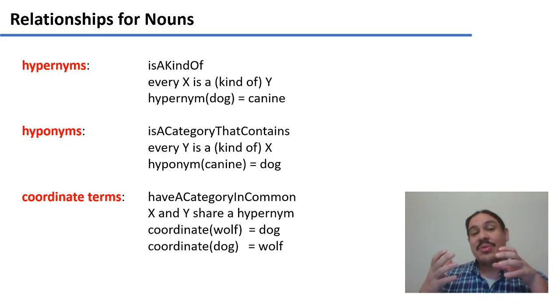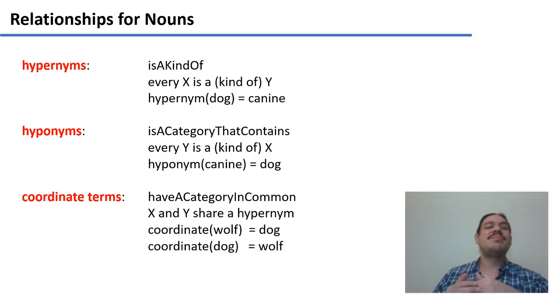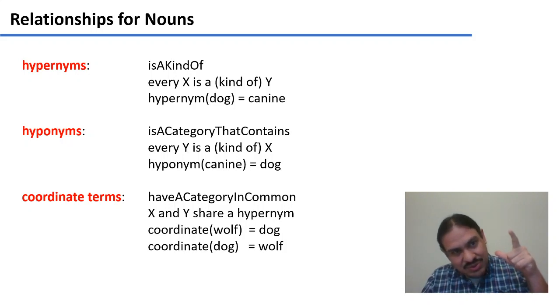So, if you know that you have some properties that are applying to a canine, they are also going to be true for a kind of canine, a dog. The opposite of this relationship is a hyponym, which is a category that contains something else. For example, a canine has within it dog. So, a canine is a category, and within it it contains dog. And then the hypernym is dog is a kind of canine.